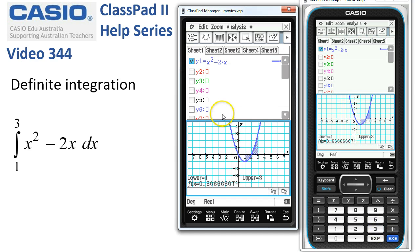With that done, ClassPad shades in the area between the x-axis, bounded by x equals 1 and x equals 3, and says that the integral is 0.66.